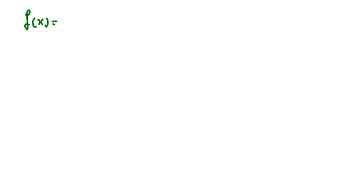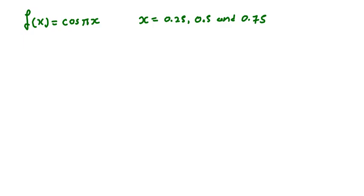We are given f(x) = cos(πx), with points at x = 0.25, 0.5, and 0.75. We need to approximate f''(0.5). First, we need the value of h. The data is evenly spaced, so h = 0.5 − 0.25 = 0.75 − 0.5 = 0.25. Our step size h is 0.25.